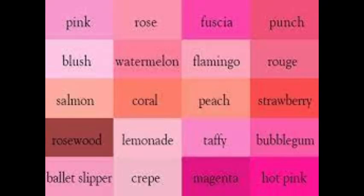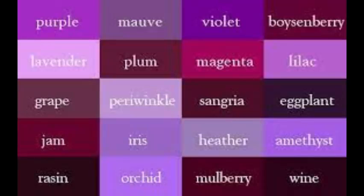Up next, we have the color purple. Its shades are: purple, mauve, violet, boysenberry, lavender, plum, magenta, lilac, grape, periwinkle, sangria, eclant, jam, iris, heather, amethyst, raisin, orchid, mulberry, and wine.